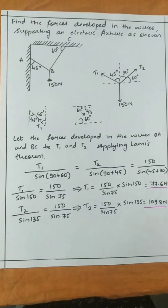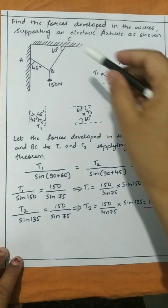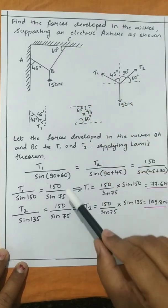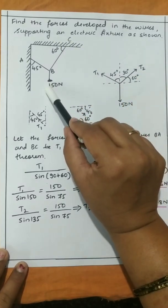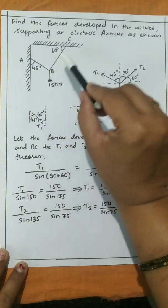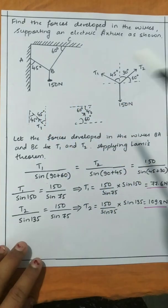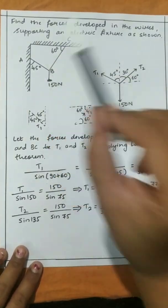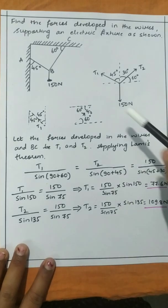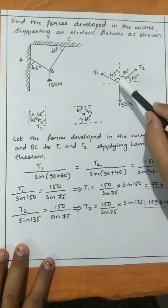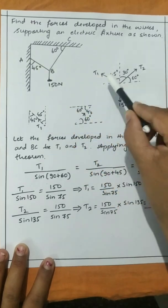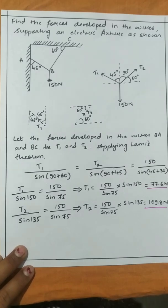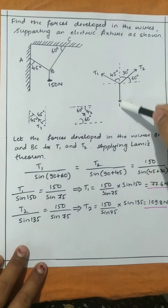Next, solving the second problem using Lamy's theorem: find the forces developed in the wires supporting an electric fixture as shown. The wires are AB and BC; there will be tension in these two wires, and a 150 N weight is given. Let the tension in wire AB be T1 and in wire BC be T2. We draw the free body diagram representing all forces and reactions, with 150 N acting downward.